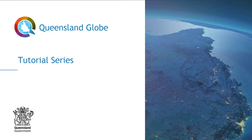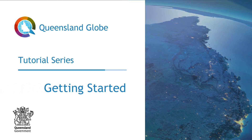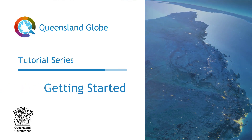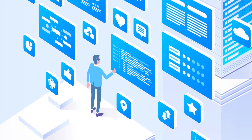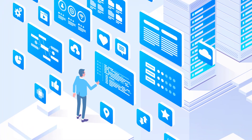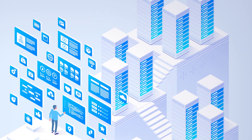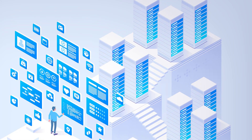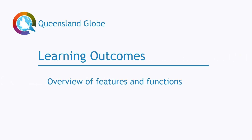Welcome to the first of a series of tutorials designed to provide you with an overview of the Queensland Globe and enable you to use it with confidence. The Queensland Globe is an online interactive tool that turns physical, geographical and spatial data about a particular location into map format. Use the Globe to access hundreds of spatial data layers about Queensland. The learning outcomes from this tutorial are an overview of features and functions and getting to know the Queensland Globe interface.